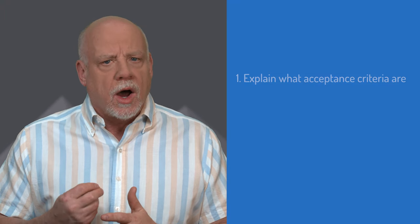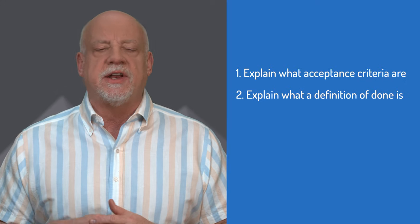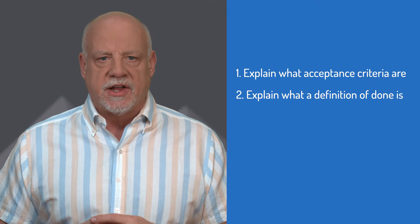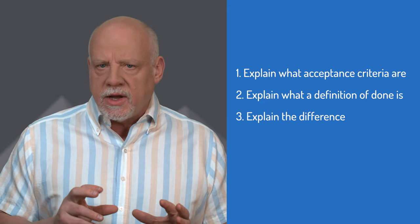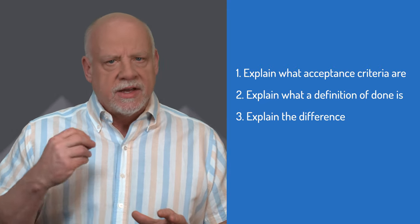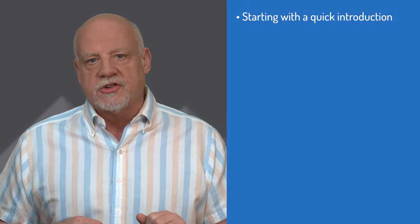Let's look at a quick example of how I'm using a definition of done and acceptance criteria right now. My acceptance criteria for this video were: one, explain what acceptance criteria are; two, explain what a definition of done is; three, explain the difference. But for this video to be complete, I also need to meet my definition of done for every video. That includes starting with a quick introduction.